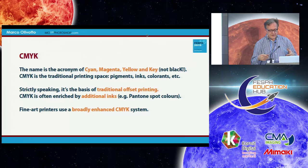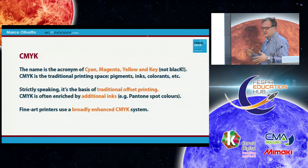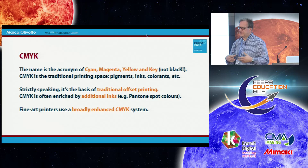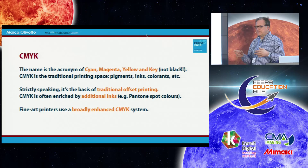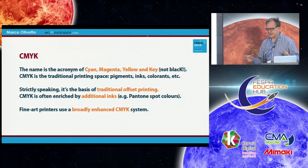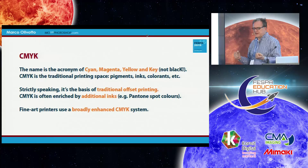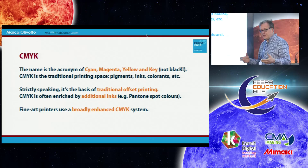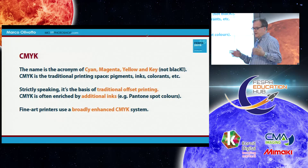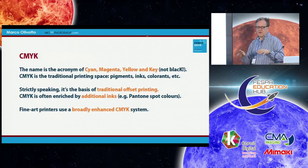You can add additional inks — hexachrome was successful for a while. You have spot colors like Pantone libraries, and fine art printing. In digital and garment printing, you can use a broadly enhanced CMYK system. Even a relatively affordable photographic printer will often have 8, 10, or 11 different inks inside — all variations on CMYK plus some colors added for gamut reasons.